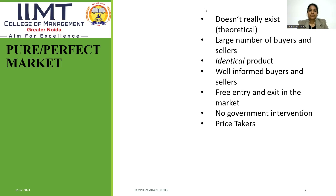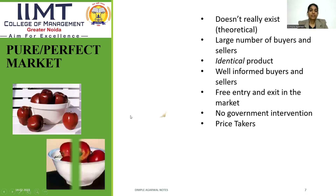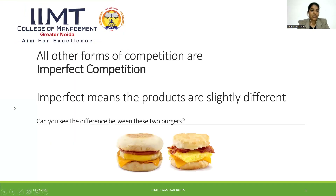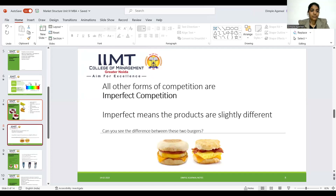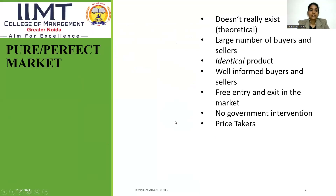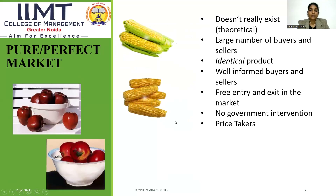For example, can you see the difference between these two apples? No — they are exactly the same. Similarly, can you see the difference between these two corns? No, they are identical. These are examples of homogeneous products in perfect competition.